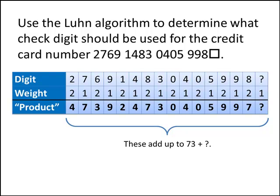But the point here is that all of those numbers should add up to something that ends in 0, and when we add up all the ones that we know, we get 73. So 73 plus the question mark should be a number that ends in 0. And since the question mark has to be a digit between 0 and 9, we know that the only possibility is that the missing digit should be 7. So that's how the Luhn algorithm works.